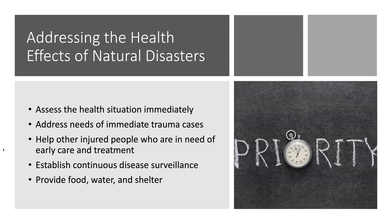When addressing the health effects of natural disasters — for example, if involved with an organization like MSF — priority actions include: assessing the health situation immediately, addressing the needs of immediate trauma cases, helping other injured people who need early care and treatment, establishing continuous disease surveillance, and providing food, water, and shelter — essentially the bottom of Maslow's hierarchy.